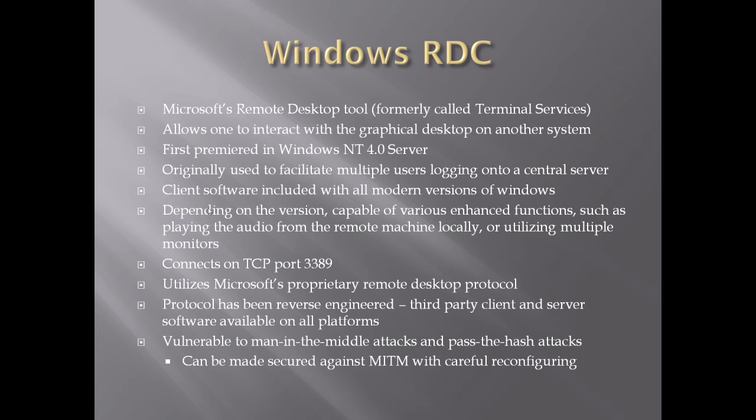The features of Windows RDC vary a lot because there have been at least seven versions. Each version adds more capabilities — not only being able to see a session, but forwarding audio so you can hear events, or utilizing multiple monitors. By default it goes over TCP port 3389 and uses Microsoft's own proprietary Remote Desktop Protocol. Although proprietary, it has been reverse-engineered, so third-party clients and servers now exist, making it available on multiple platforms — a Linux client can connect to a Windows RDP server, and Linux can even host an RDP server for Windows clients.